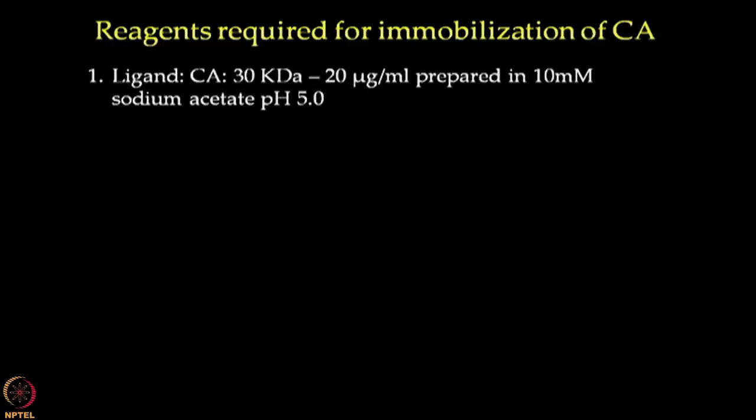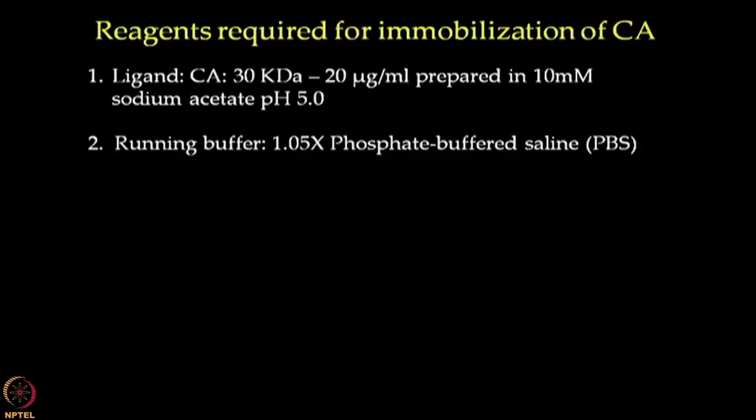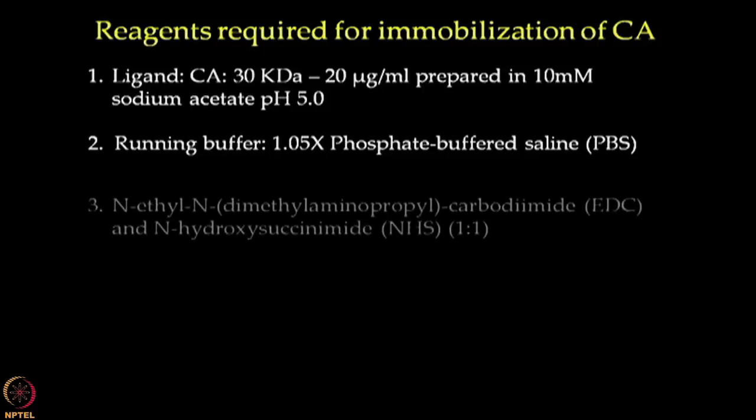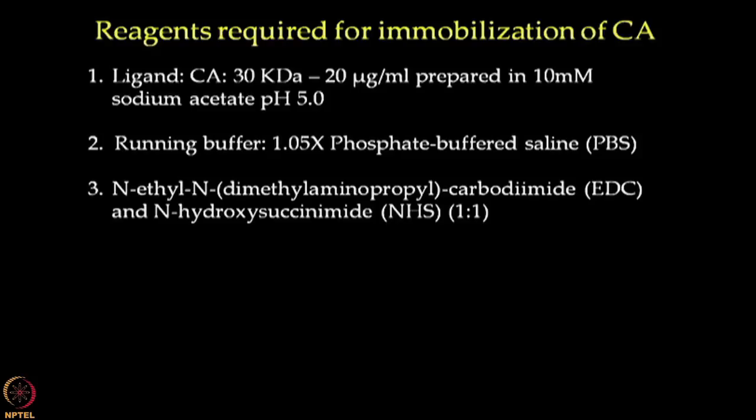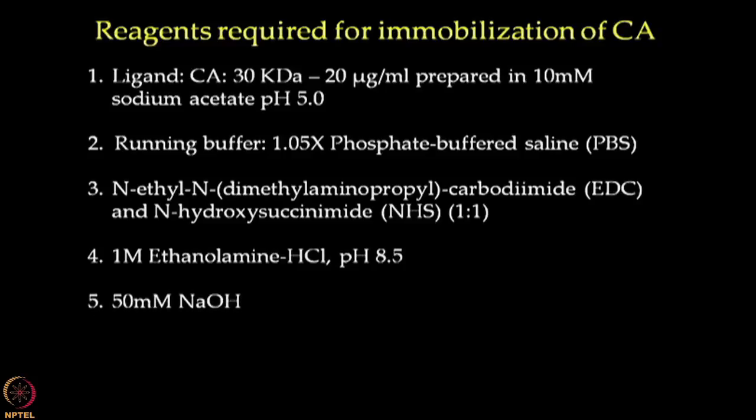As per the volume listed on the table, we will prepare the buffers and reagents required for immobilization of carbonic anhydrase on the sensor chip. The ligand is prepared at a working concentration of 20 microgram per ml using an immobilization buffer of 10 millimolar sodium acetate pH 5. We will be using 1.05x PBS buffer as the running buffer which will be connected to the system followed by priming. EDC and NHS are prepared as suggested in the amine coupling kit for surface activation. 1 molar ethanolamine HCl pH 8.5 is prepared for blocking the free ester groups on the surface. Lastly, 50 millimolar NaOH was prepared which will be used to remove the electrostatically bound ligand.